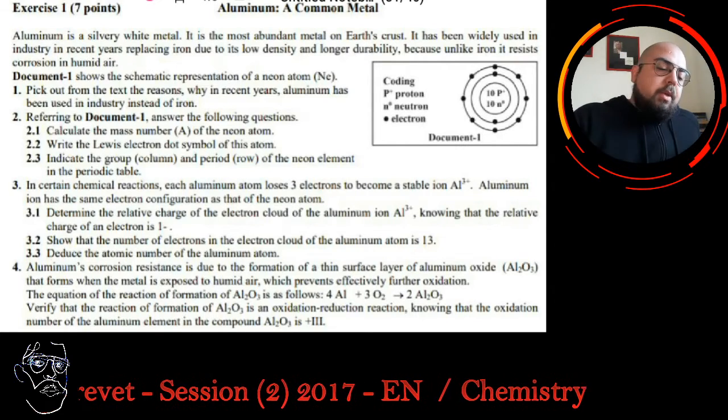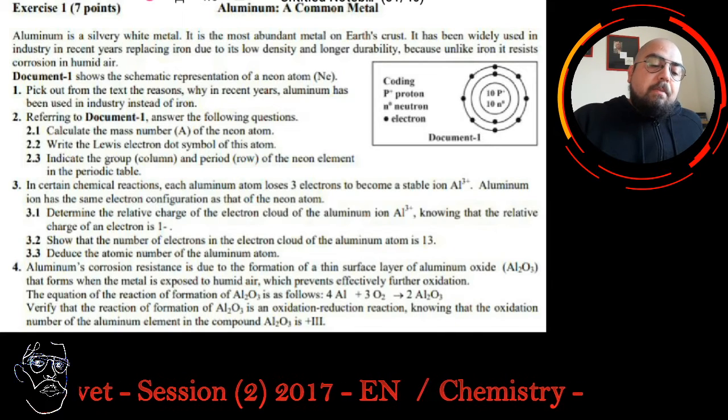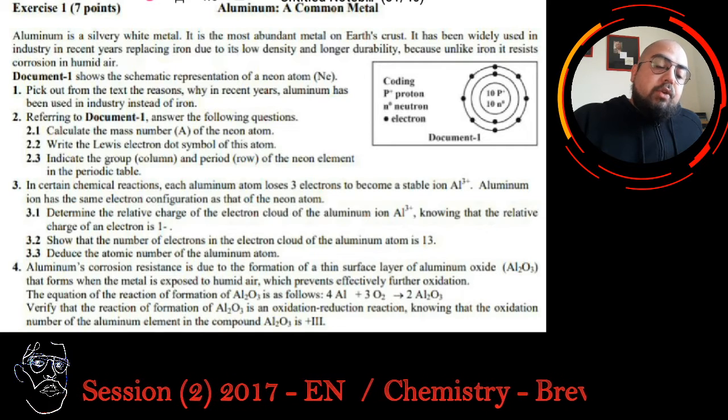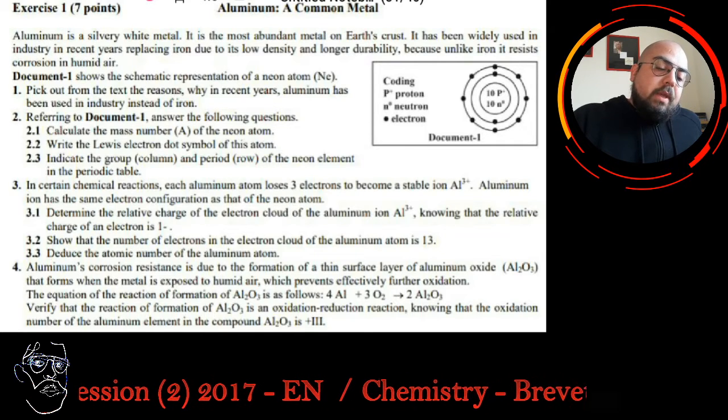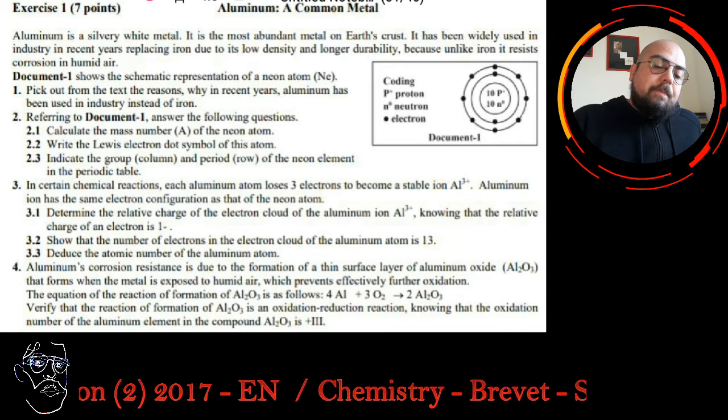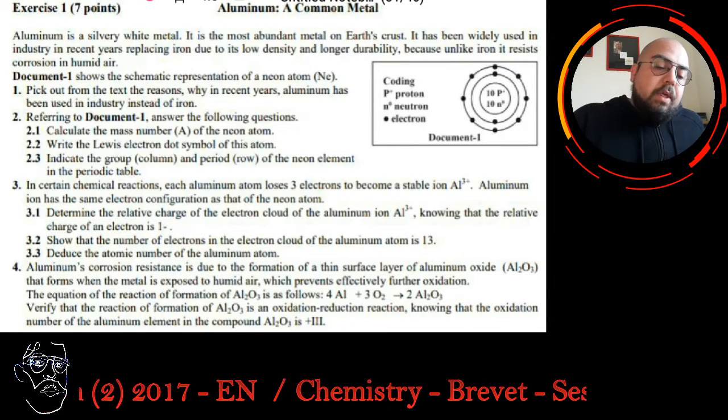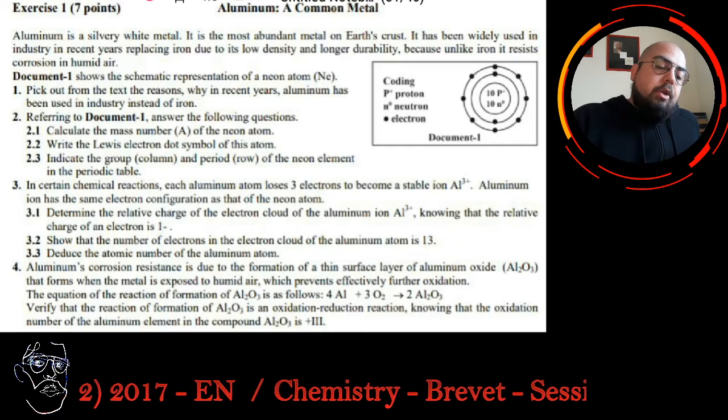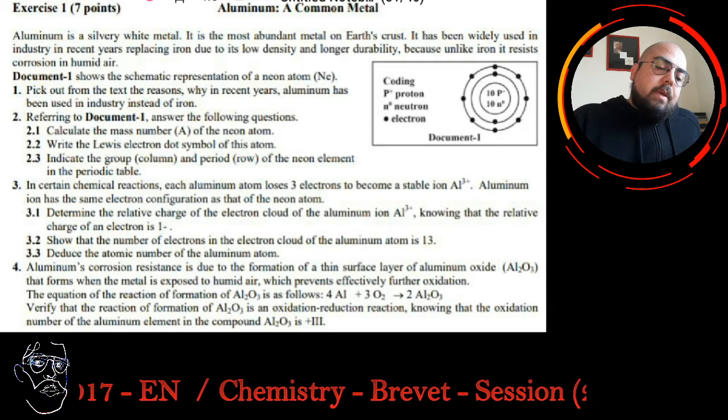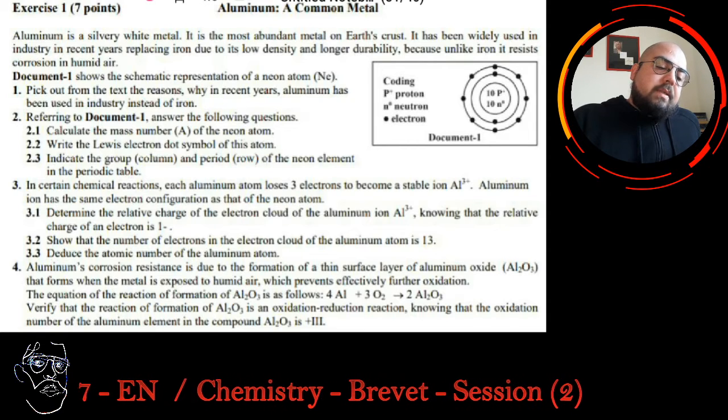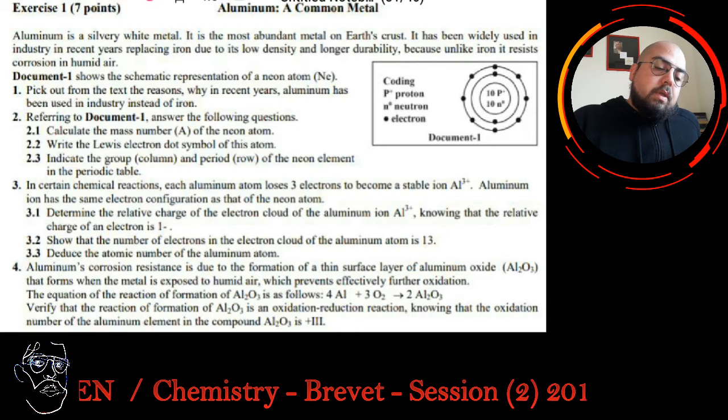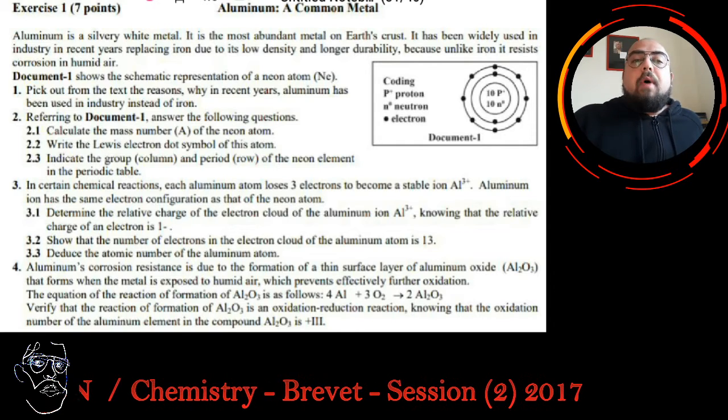Aluminum is a common metal. Aluminum is a silvery white metal. It is the most abundant metal on Earth's crust. It has been widely used in industry in recent years replacing iron due to its low density and longer durability, because unlike iron it resists corrosion in humid air. Document 1 shows a schematic representation of a neon atom. Pick out from the text the reasons why in recent years aluminum has been used in industry instead of iron.